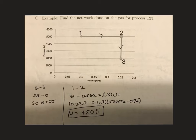Since this is a two-step process, we're going to have to find the work twice. So we have to find the work from 1 to 2, and then the work from 2 to 3, and then add them together to get the net work.